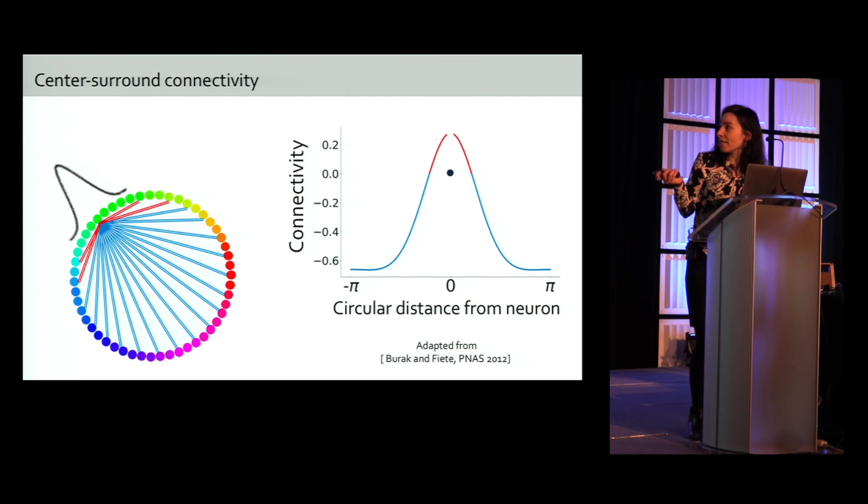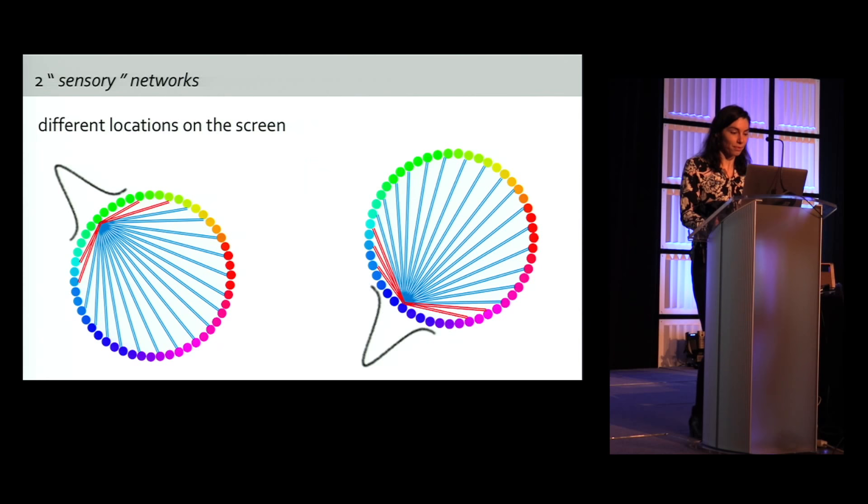Neurons with similar selectivity share excitatory connection in red here, and more distant neurons have inhibitory connections in blue. So self-excitation is set to zero here, such that the sensory network will not be able to maintain an input over seconds. We model several of the sensory network in order to represent several items at different locations on the screen, and I will always show two ring-like sensory networks, but in reality we model eight of them to be able to increase the load in the network till number eight.